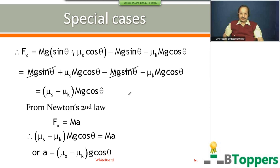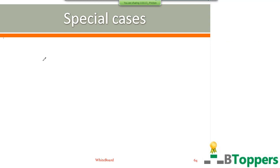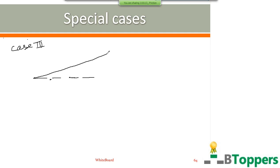Next I am going to discuss the next special case, Case 3. Coming to the next special case, let us consider a block of mass m placed on the inclined surface of a fixed inclined plane which makes an angle θ to the horizontal.